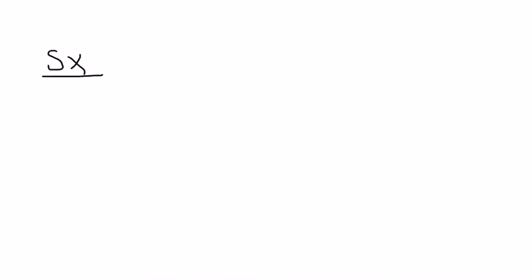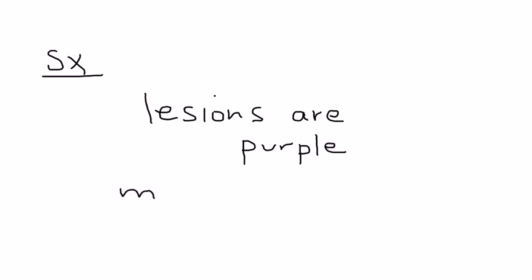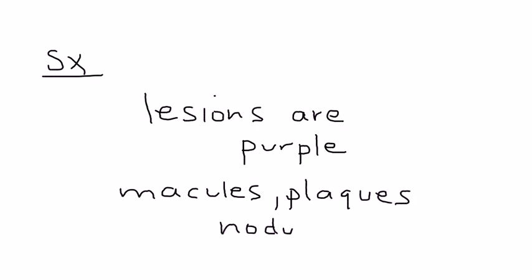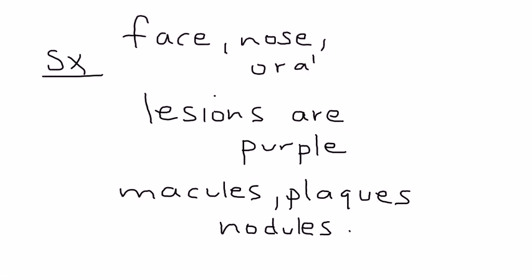The lesions of Kaposi sarcoma are characteristically described as being purple. They can be either macules, plaques, or nodules, and they can appear on various parts of the body — the face, nose, oral mucosa, and a few other places as well. If you have a clinical vignette describing purple lesions in a patient with some form of immunosuppression such as AIDS or organ transplant, Kaposi sarcoma should be very high on your differential.